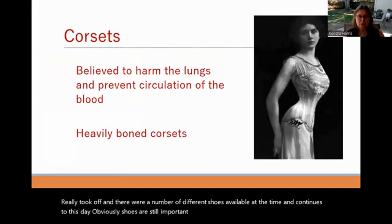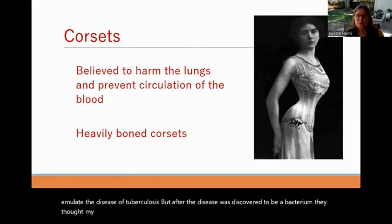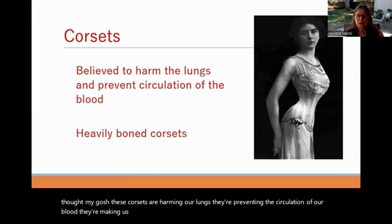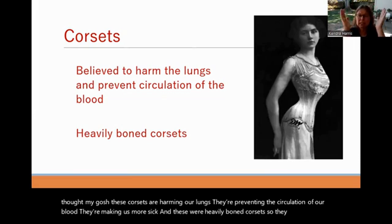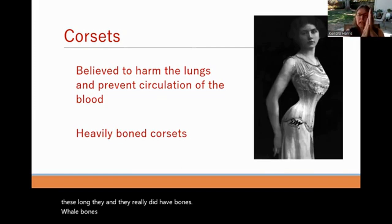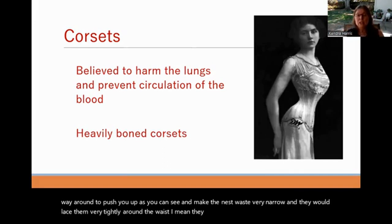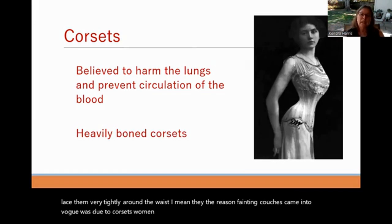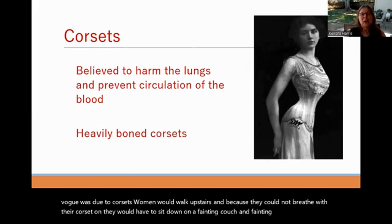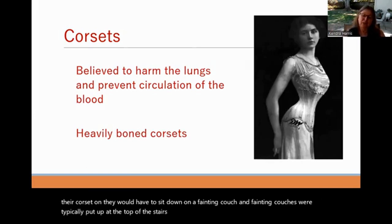Fainting couches came into vogue because of corsets — women would walk upstairs and, because they could not breathe with their corset on, they would have to sit down. Fainting couches were typically placed at the top of stairs for women to faint after walking up them. After they decided boned corsets weren't good, something called a 'good sense waist' or health corsets emerged — made with elasticized fabric that helped alleviate the pressure on the ribs.